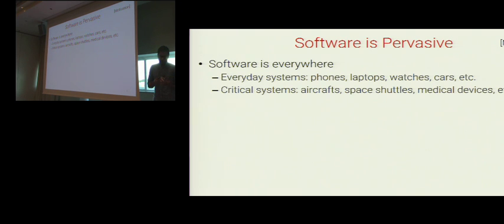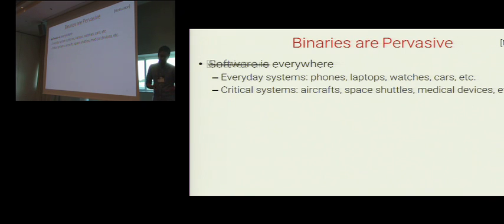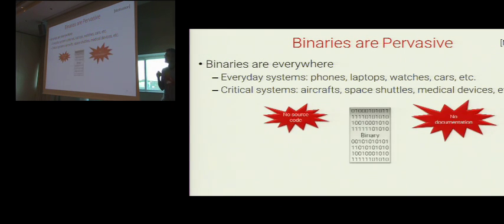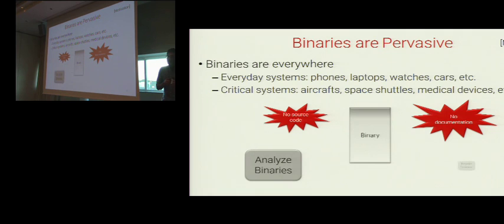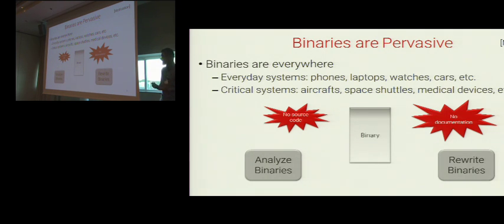Let me modify this slide slightly to say that binaries are pervasive — binaries are everywhere, they run in all sorts of devices. And sometimes these binaries lack source code and/or documentation. These binaries could be old legacy binaries or they could be untrusted binaries downloaded from somewhere. And we as computer scientists are often asked to develop tools that can analyze and rewrite these binaries.